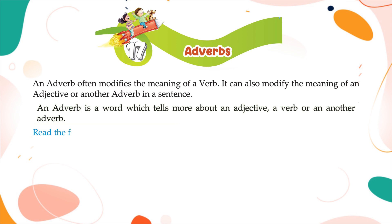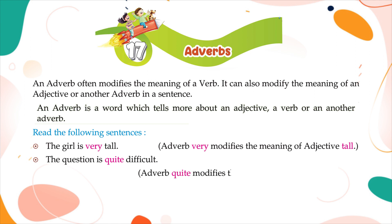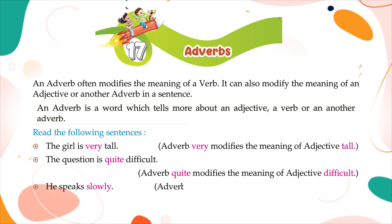Read the following sentences. 'The girl is very tall.' The adverb 'very' modifies the meaning of the adjective 'tall.' 'The question is quite difficult.' The adverb 'quite' modifies the meaning of the adjective 'difficult.' 'He speaks slowly.' The adverb 'slowly' modifies the meaning of the verb 'speaks.'